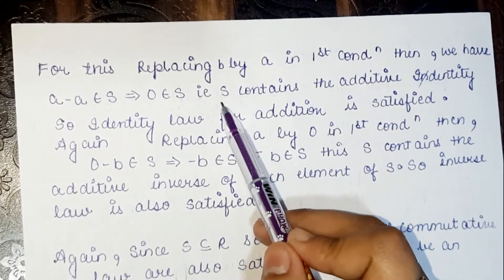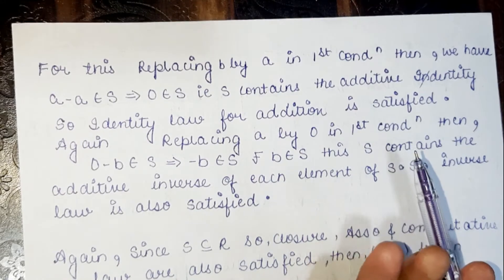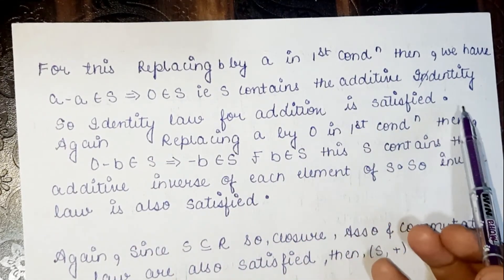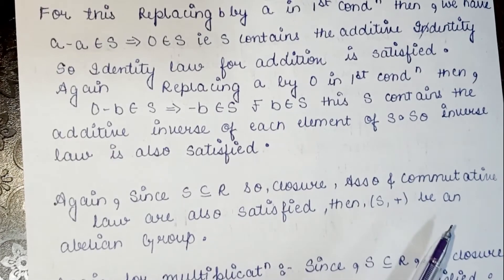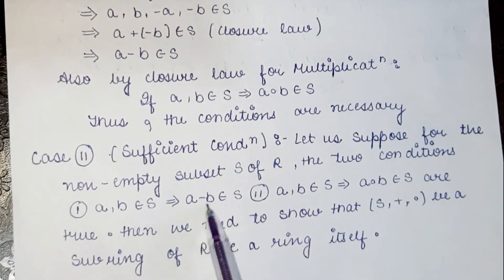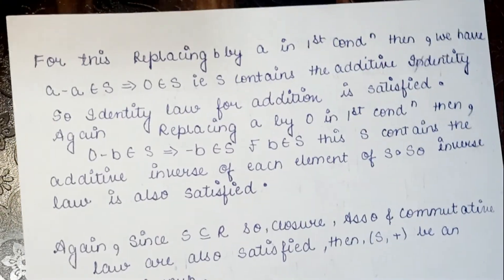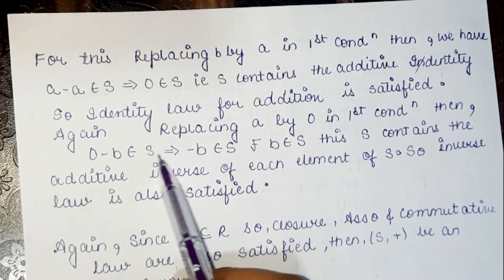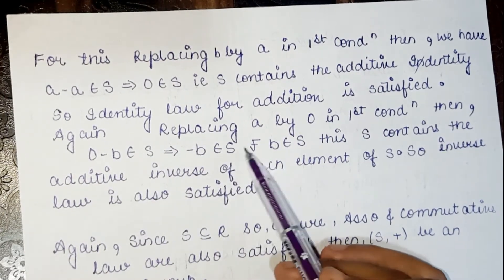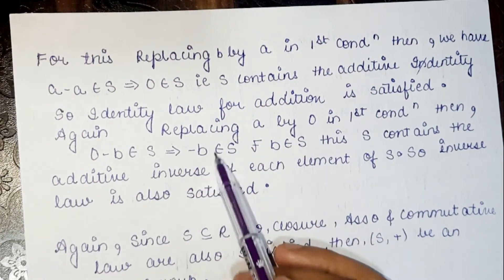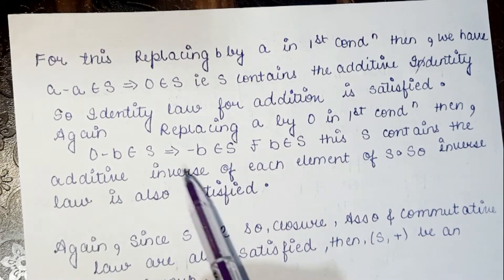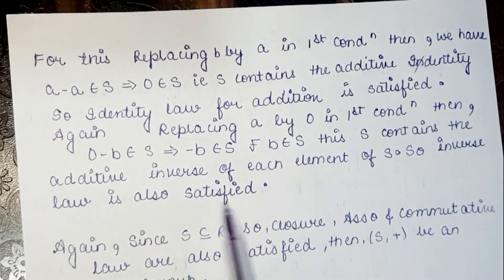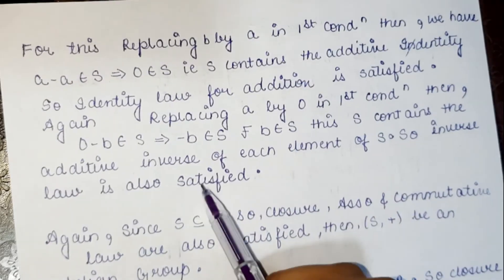This shows S contains the additive identity, so the identity law for addition is satisfied. For the inverse law, we replace A by 0 in the first condition: 0 minus B belongs to S, which implies minus B belongs to S. So for all B in S, minus B also belongs to S — S contains the additive inverse of each element.